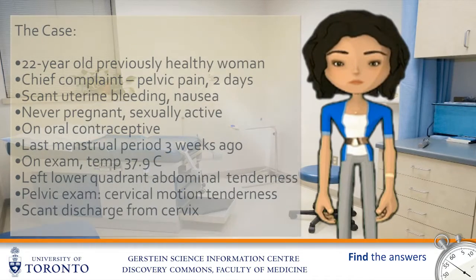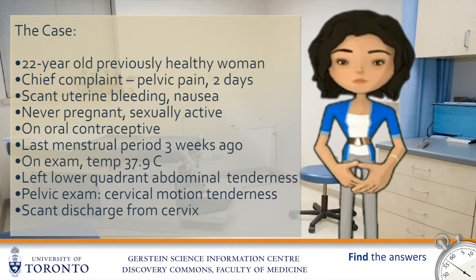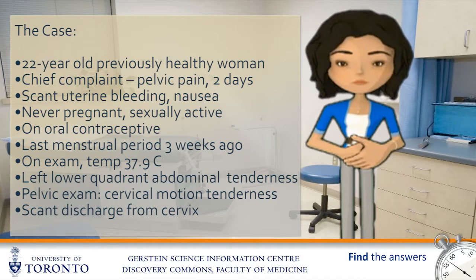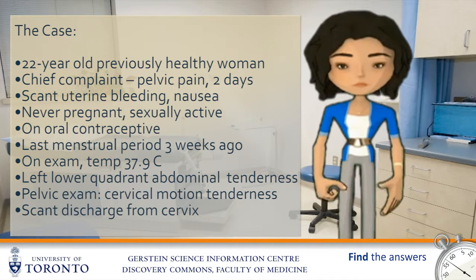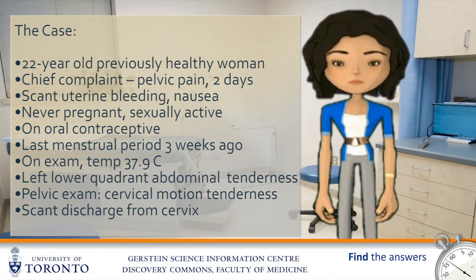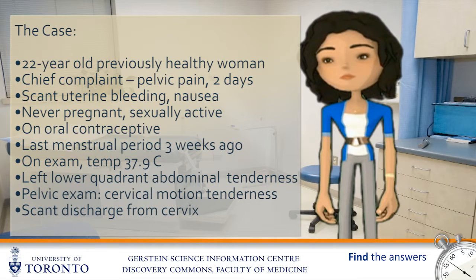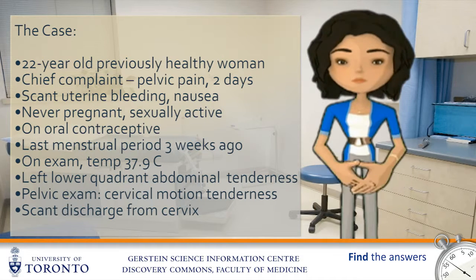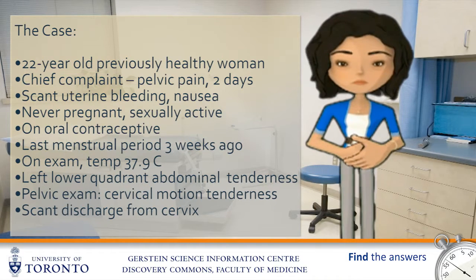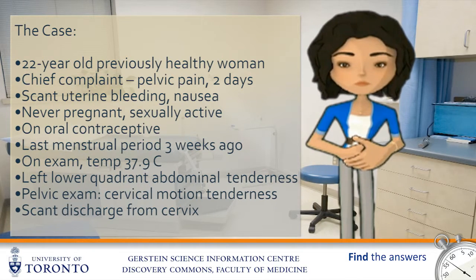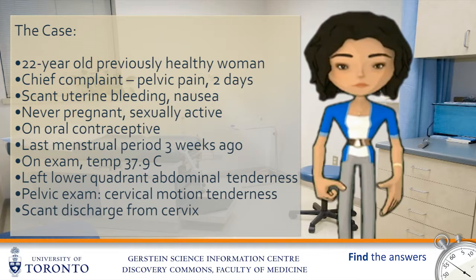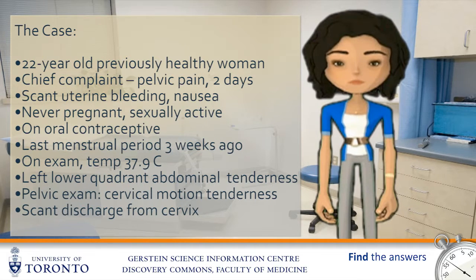A young woman comes to our office complaining of uterine bleeding, pelvic pain and mild nausea for the last two days. She's 22 years old and she's otherwise healthy. She's never been pregnant but she is sexually active and she takes oral contraceptives. Her last menstrual period was three weeks ago.